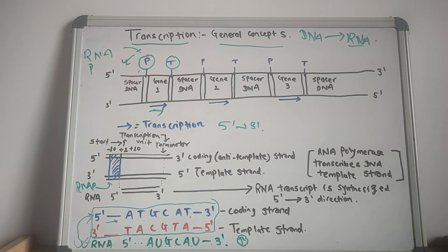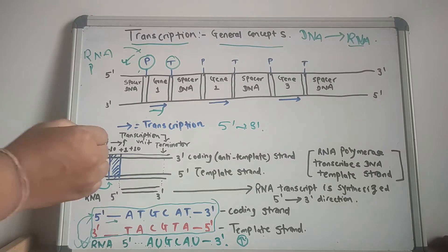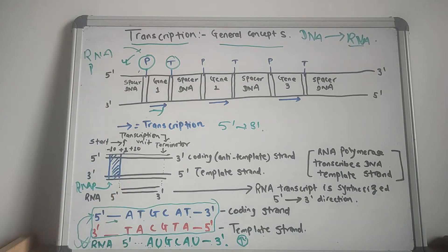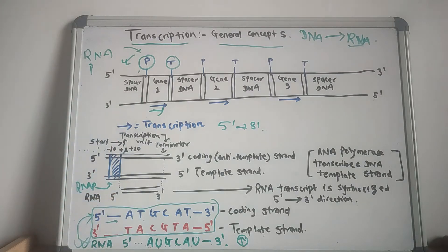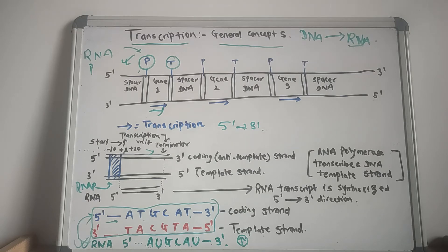In the vicinity of the gene, a numbering system is used to identify the location of important bases. The first base transcribed as RNA is defined as plus one. To the left — five prime or upstream of this starting point — the bases are minus one, minus two, minus three, and so on. To the right they are plus two, plus three, plus four, and so on. Transcription terminates when the RNA polymerase reaches the termination signal.